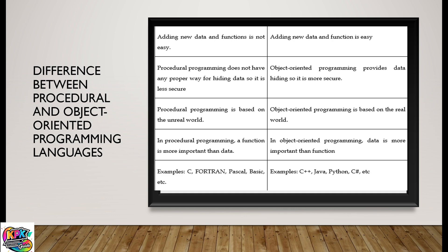Examples of procedural languages are C, Fortran, Pascal, and Basic. Examples of object-oriented programming languages are C++, Java, Python, and C#.